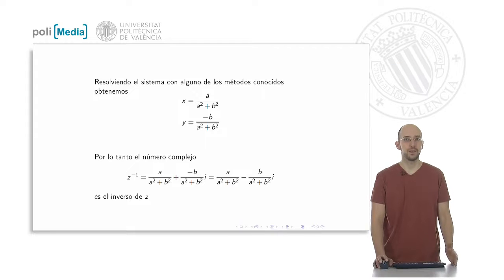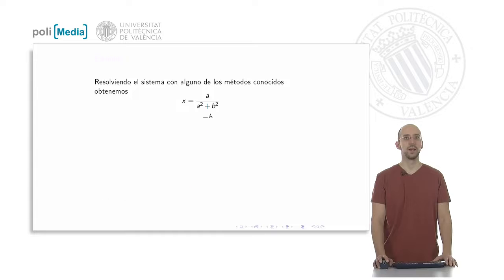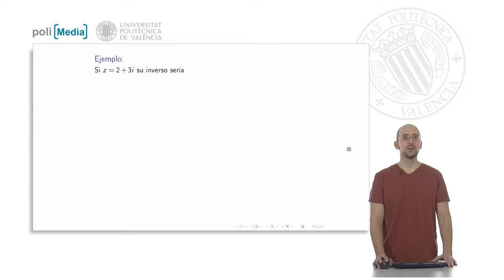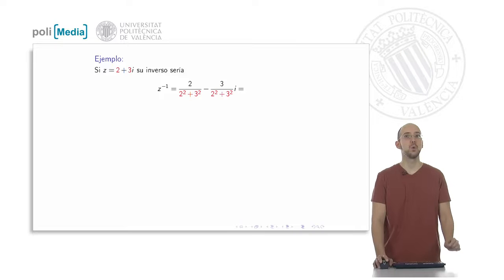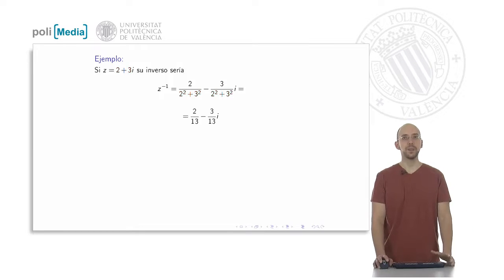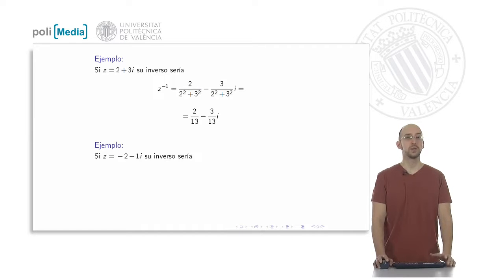So the inverse of z has the formula: a divided by a squared plus b squared, minus b divided by a squared plus b squared times i. As a quick example, given the complex number two plus three i, its inverse is simply two thirteenths minus three thirteenths i — we take the real part for the first fraction and the imaginary part for the second, dividing by the sum of their squares.